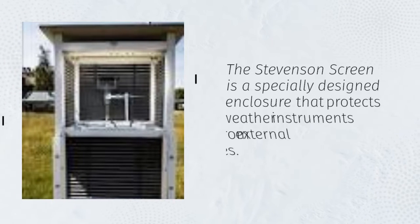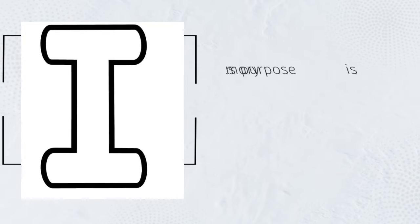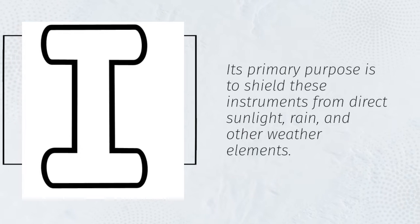The Stevenson screen is a specially designed enclosure that protects weather instruments from external influences. Its primary purpose is to shield these instruments from direct sunlight, rain, and other weather elements.